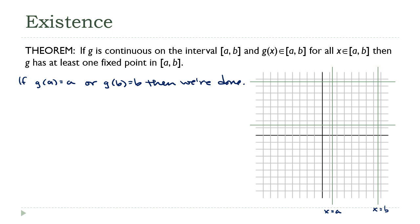Okay so assume they aren't. Let's look at the case where they aren't. Assume g of a is not equal to a and g of b is not equal to b. Then this tells us two things. First, g of a is greater than a because a is the lower bound, and g of b is less than b because b is the upper bound.